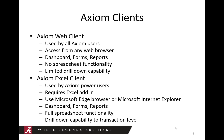There are two types of Axiom clients. First, the Axiom Web Client. This can be used by all Axiom users. The web version can be accessed from any web browser. Dashboards, forms, and reports are available from the web client. There are a couple of disadvantages to the web client: there is no spreadsheet functionality, and there is limited drill-down capability.